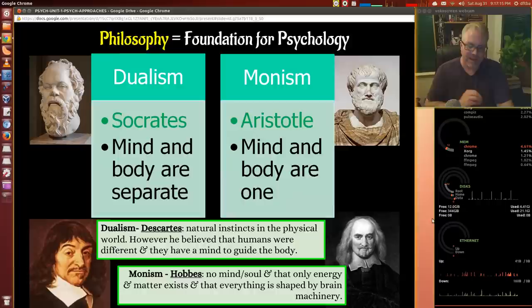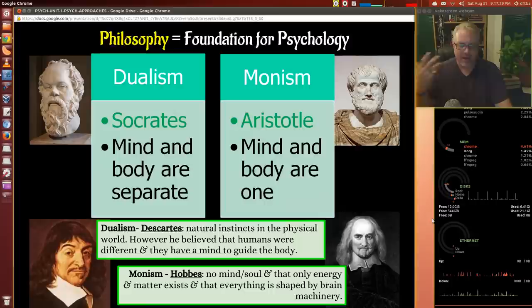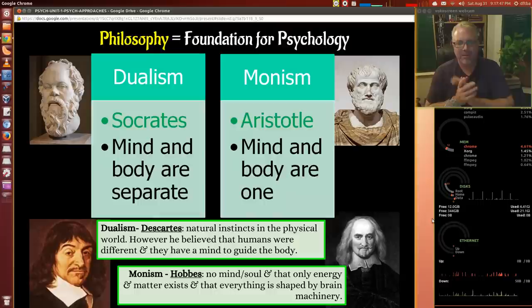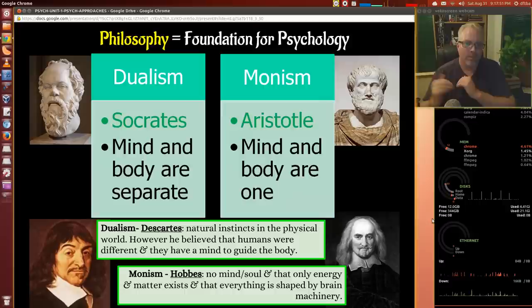Hobbes believed, as Aristotle did, that the mind and body were one thing. He said there was no mind or soul — only energy and matter existed, and everything is shaped by the machinery that makes up the brain. He was also the anti-Locke in many ways. John Locke thought all men were kind of created equal — a blank slate idea. Hobbes said people are brutish, and if left to their own devices would be cruel, mean, and hateful, so you have to have an absolute ruler to guide them.